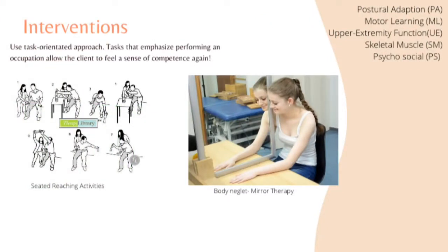Interventions for stroke rehab should use a task-oriented approach, which has shown significant effectiveness. When doing these interventions, try to make the treatment environment mimic reality as much as possible — for example, if you're working on meal prep, get in the kitchen, somewhere familiar to the client. Different methods of intervention include postural adaptation, motor learning, and upper extremity function. For postural adaptation, you could do sitting, reaching, and maintaining trunk midline, as shown in the first picture — those are all different reaching activities.